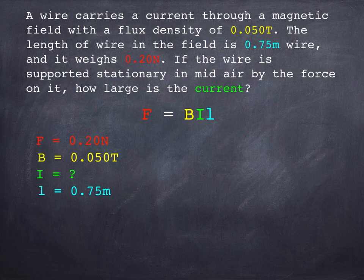And when we do that here, we can see that we are after current, but our equation at the moment isn't arranged correctly. So we're going to have to rearrange that equation first to make I, the current, the subject of the equation.